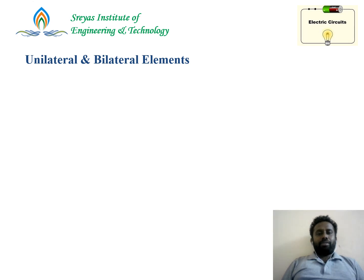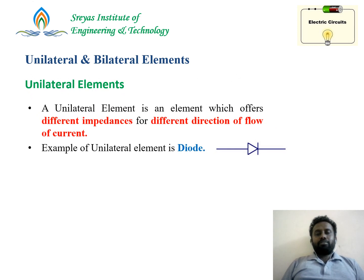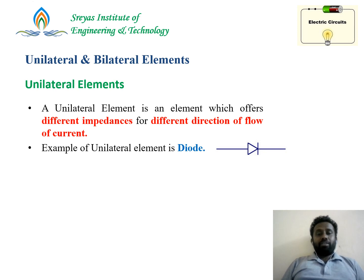What is a unilateral element? A unilateral element is one which offers different impedance in different directions of current flow. For example, a diode: when it is forward biased it conducts — the resistance or opposition is very low. When you interchange the terminals, the diode does not conduct — there is very little current flowing, meaning the impedance is very high. So it has different impedances in different directions, making it the best example of a unilateral element.